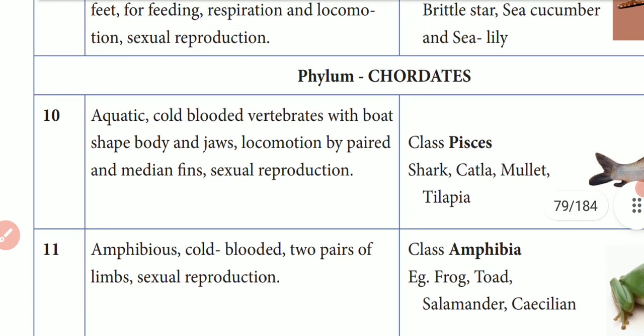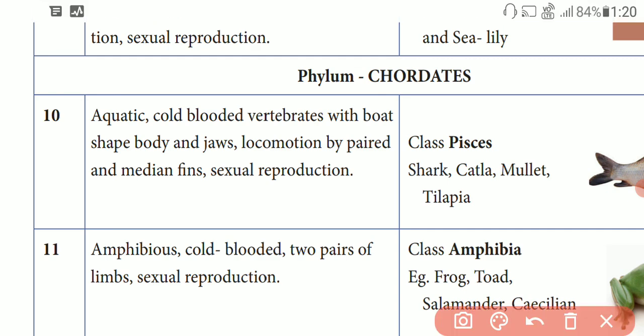First, Pisces. Aquatic cold-blooded vertebrates with board-shaped body and jaws. This is an aquatic animal living in water — cold-blooded vertebrates with presence of backbone and board-shaped body. Upper and lower jaws are present.